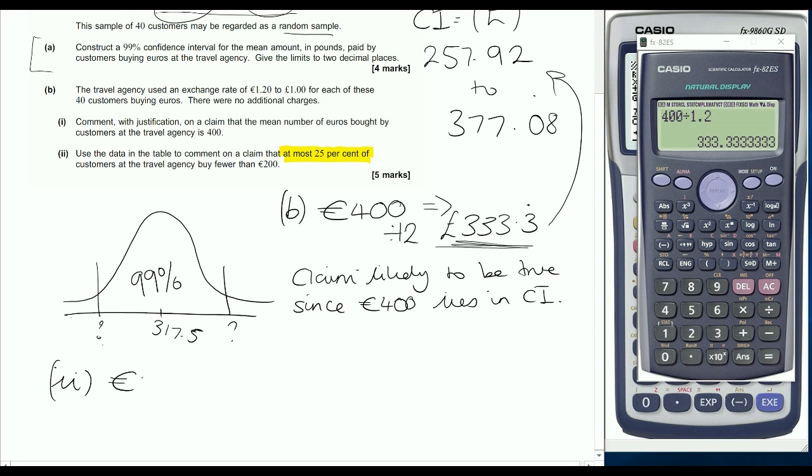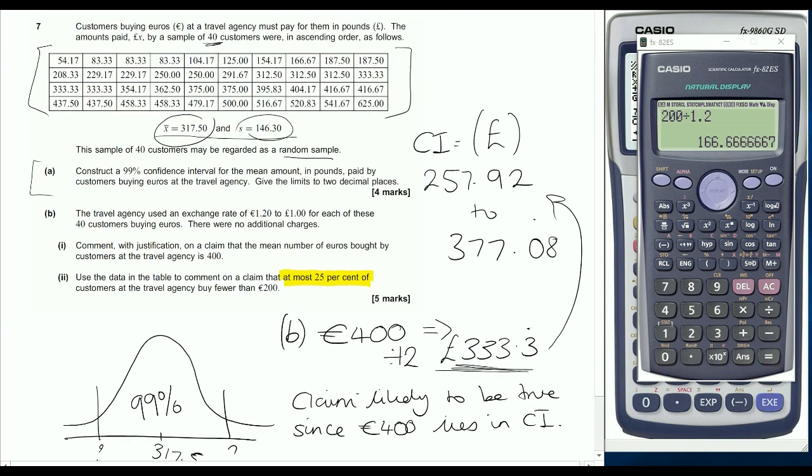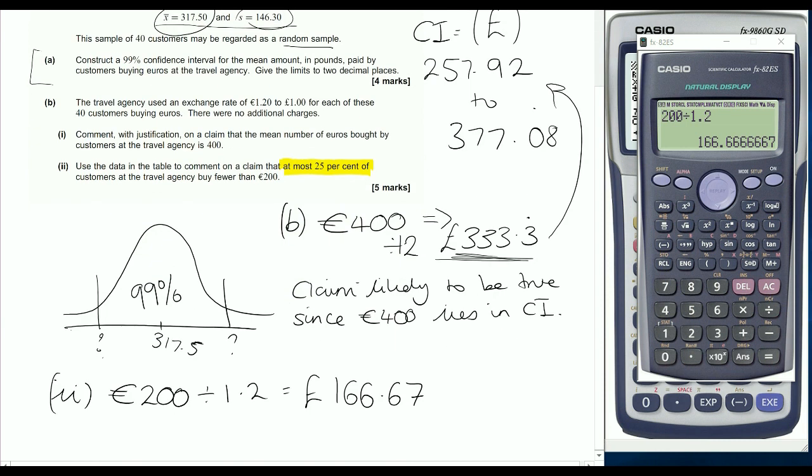So if we just look at what 200 euros is, let's firstly convert that into pounds. Divide that by 1.2 to find out what it is in pounds, because then we're just going to do a direct look in our table. Dividing by 1.2 gives us the value 166.67 pounds. What we're being asked to look at is the table.